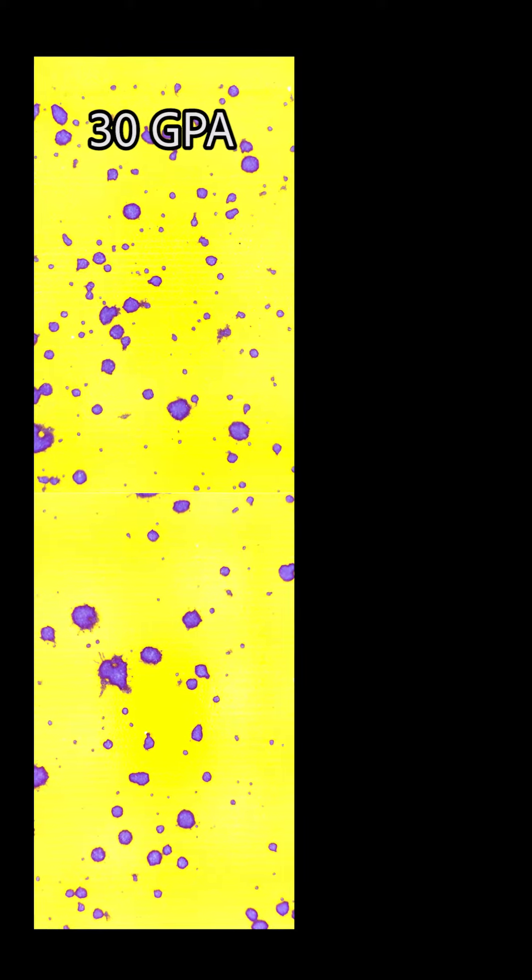First up was very coarse spray from an asymmetrical flat fan nozzle. We saw 6.4% coverage and 50 deposits per square centimeter at about 30 gallons per acre. When we raised the volume to 40 gallons per acre, we doubled the area covered and we saw a bump in the number of hits.